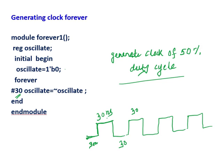The duty cycle is 50%, because the duty cycle means: logic one is active for 30 nanoseconds and logic zero is for 30 nanoseconds. So it is a 50% duty cycle - on time equals off time. On time equals 30 nanoseconds and off time equals 30 nanoseconds.